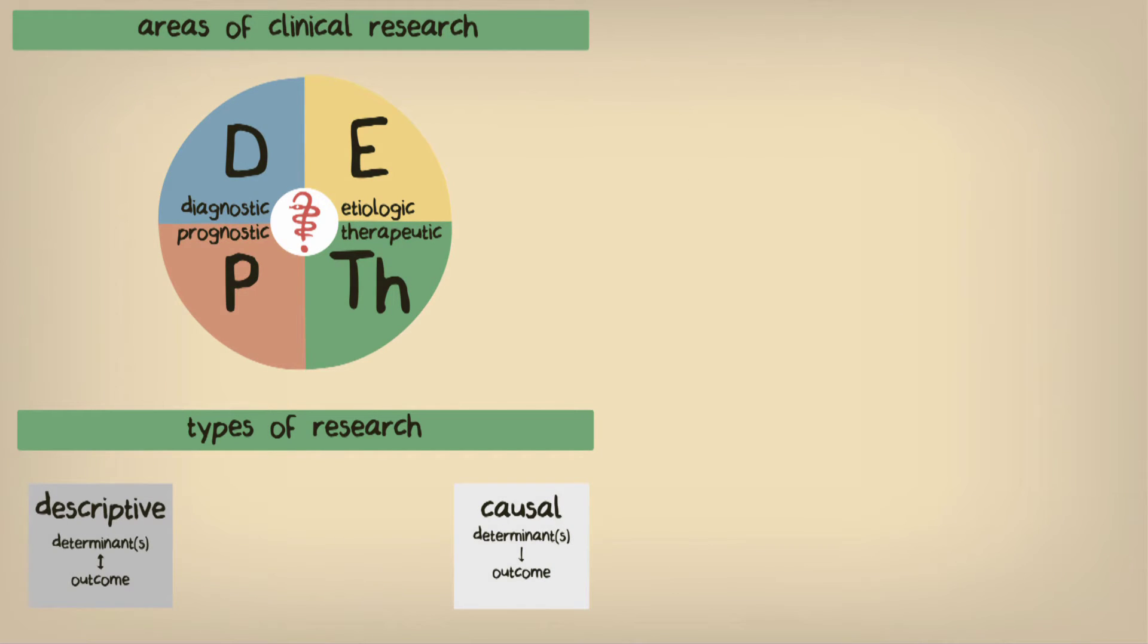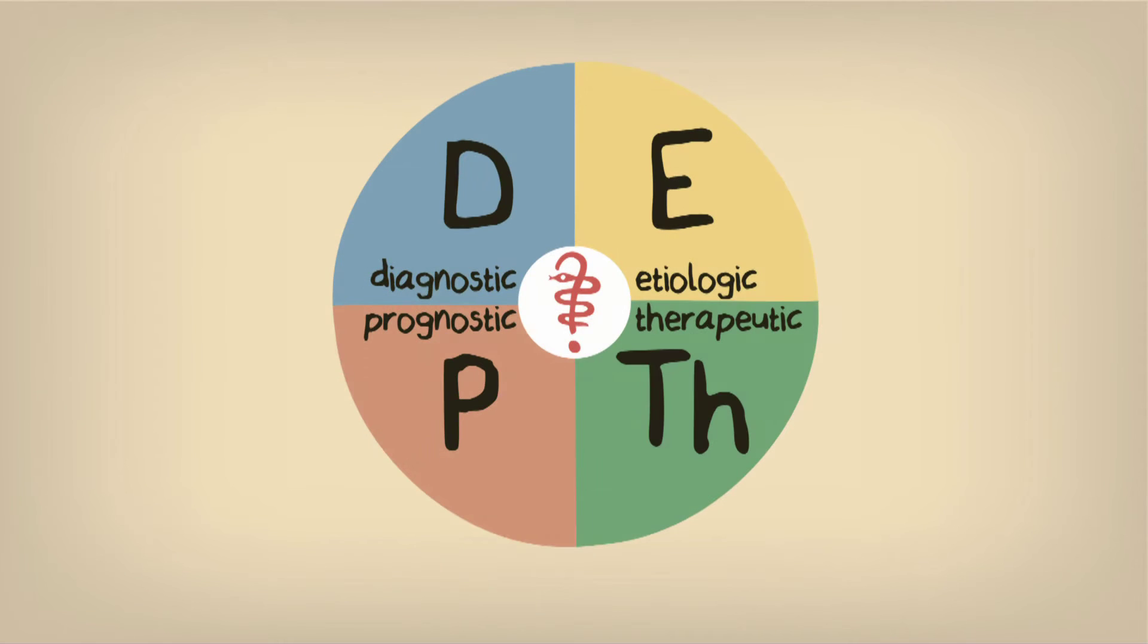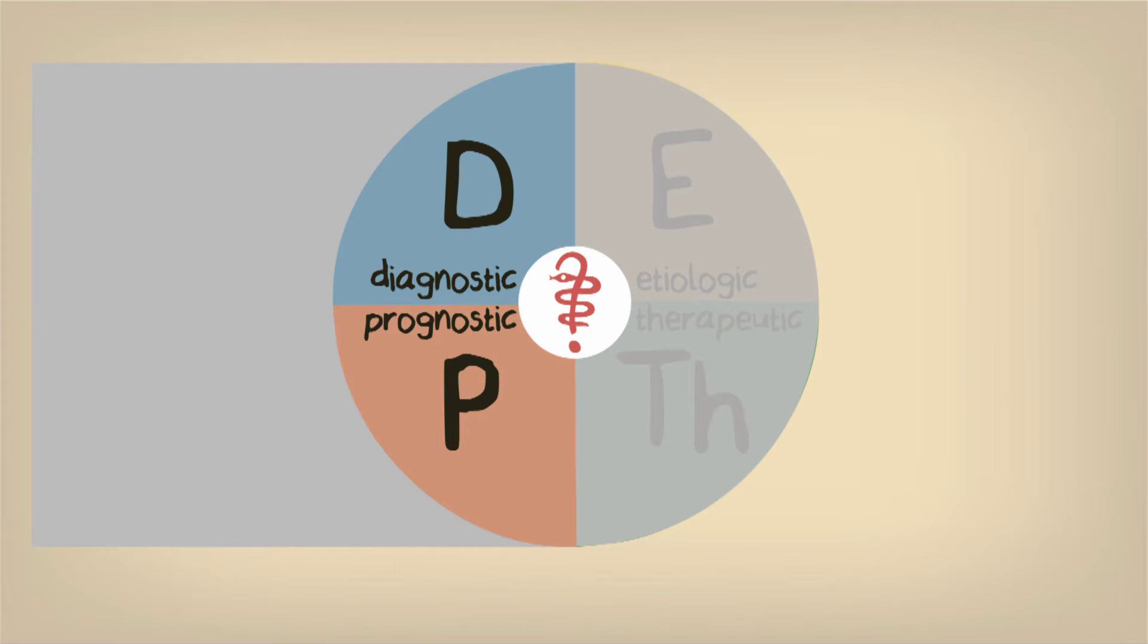So how does this relate to our depth model? In general, for diagnostic and prognostic research problems, we're interested in seeing which information can help us predict a patient's diagnosis or prognosis. In effect, our aim is to describe the outcome in relation to some patient or test characteristics, known technically as determinants or predictors.